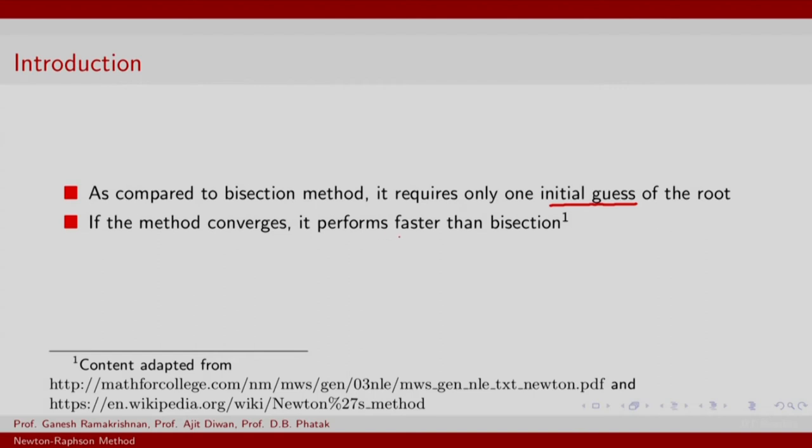And if the method converges, it performs faster than bisection. That is because the search range is not just based on a fixed pre-decided factor of half reduction in the search space. It actually varies with the shape and curvature of the function.